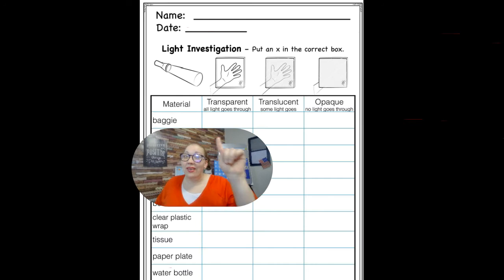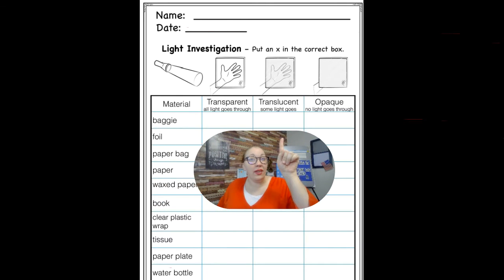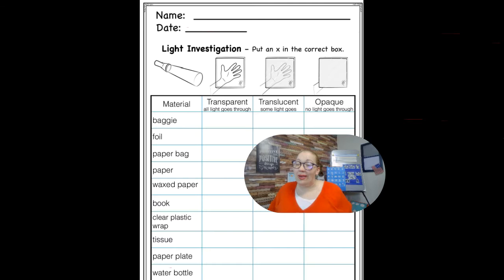Is it transparent, translucent, or opaque? Whichever one it is, you're going to draw an X in that column.